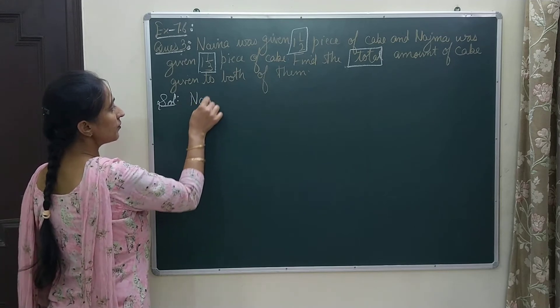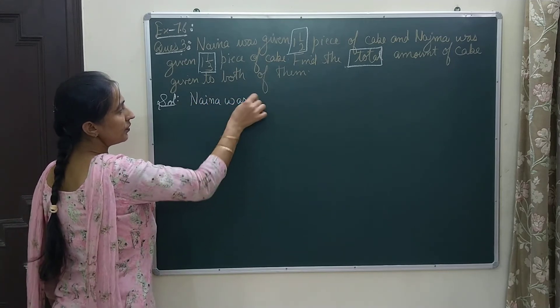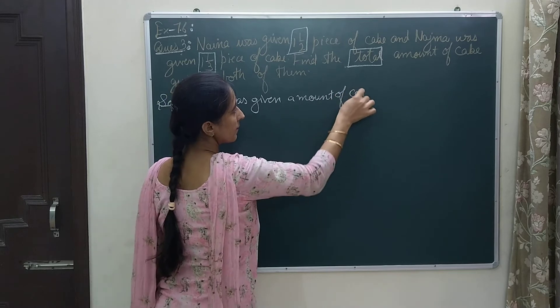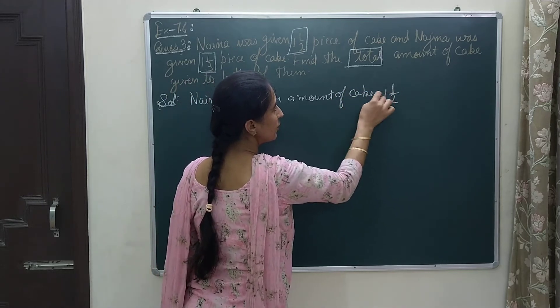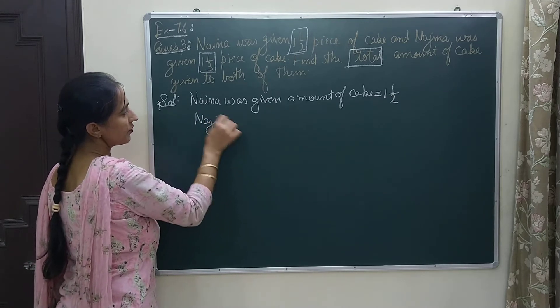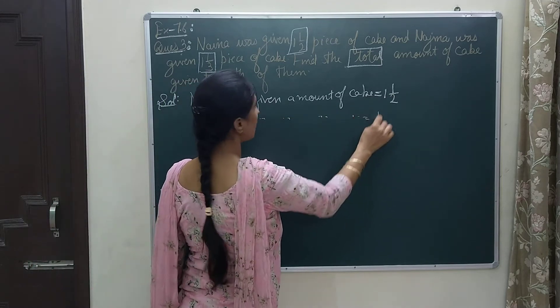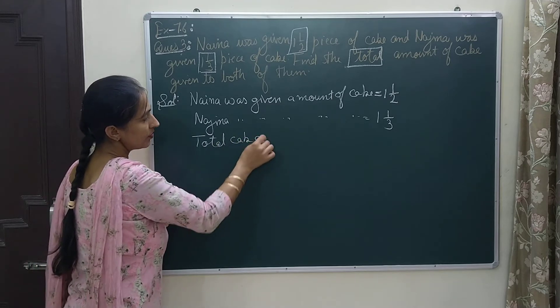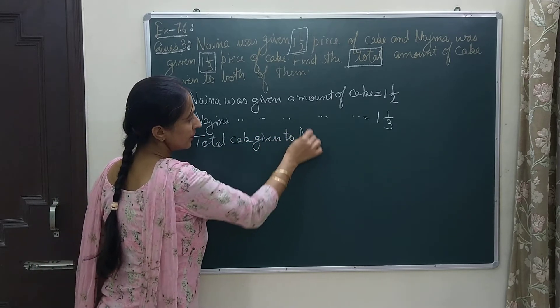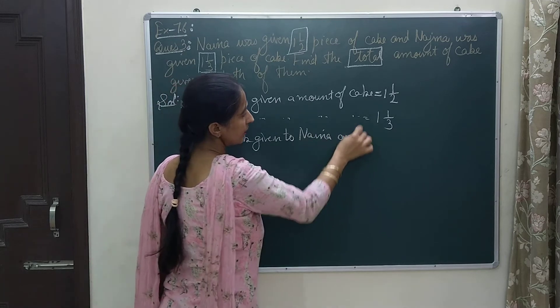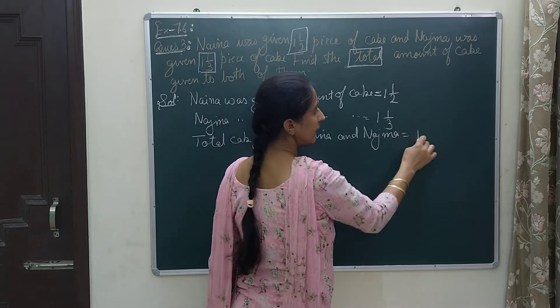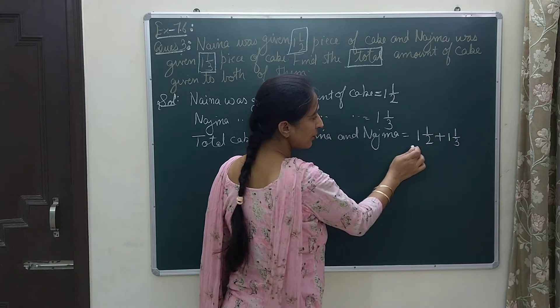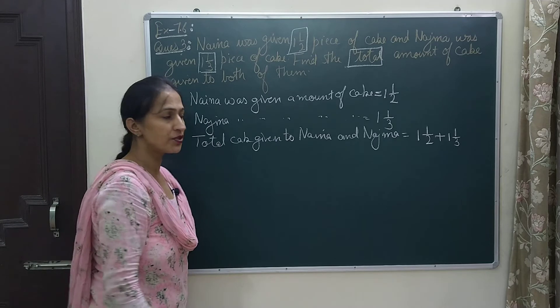So let us write down. We are given that Naina was given amount of cake that is 1 and 1/2, and Najma was given amount of cake 1 and 1/3. Here we need total cake given to Naina and Najma, and for total we will find the addition of both the given fractions. Here two girls got 1 and 1/2 and 1 and 1/3, so we are going to find the addition for both.